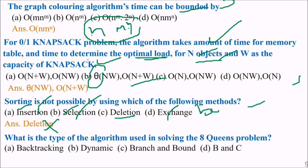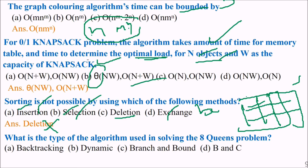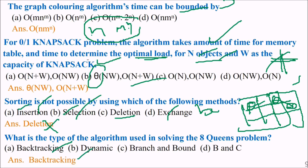What is the type of algorithm used in solving the eight queens problem? In the N-queens problem, whenever we place a queen and the next placement violates the constraint of not placing horizontally, vertically, or diagonally, we shift the previous one — that is, we backtrack. The answer is backtracking.